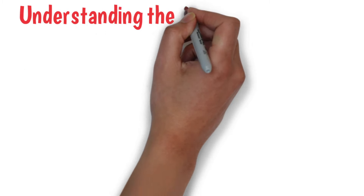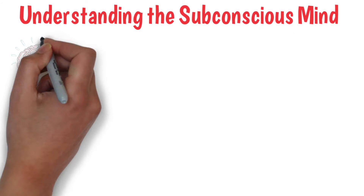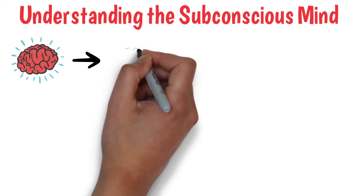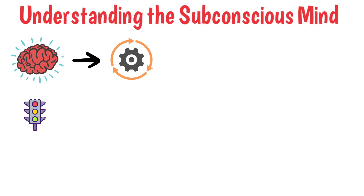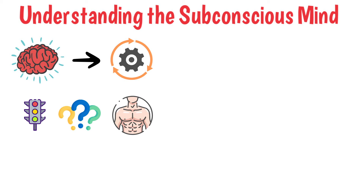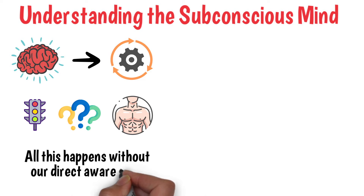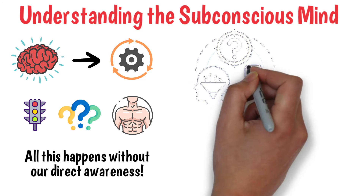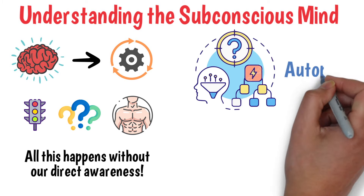Understanding the Subconscious Mind. To grasp the significance of the subconscious mind, it's important to realize that it is constantly at work. It interprets symbols, attributes meanings, and regulates bodily functions effortlessly, all without our direct awareness. This remarkable capability allows us to execute intricate tasks effortlessly, as if on autopilot.